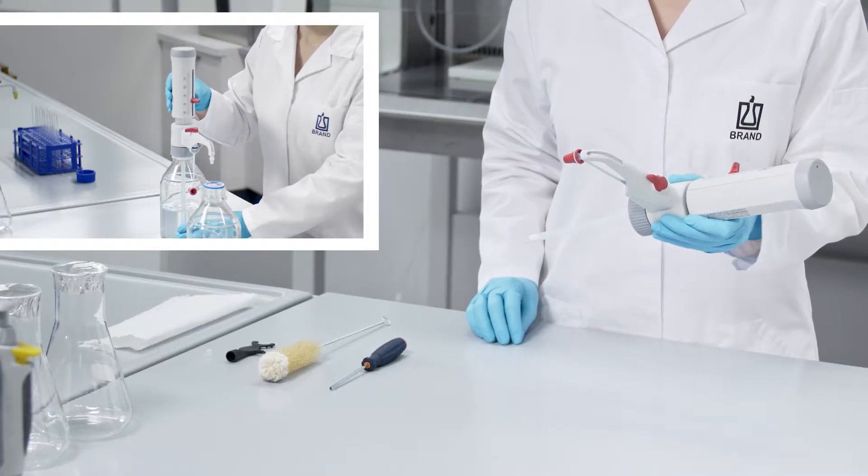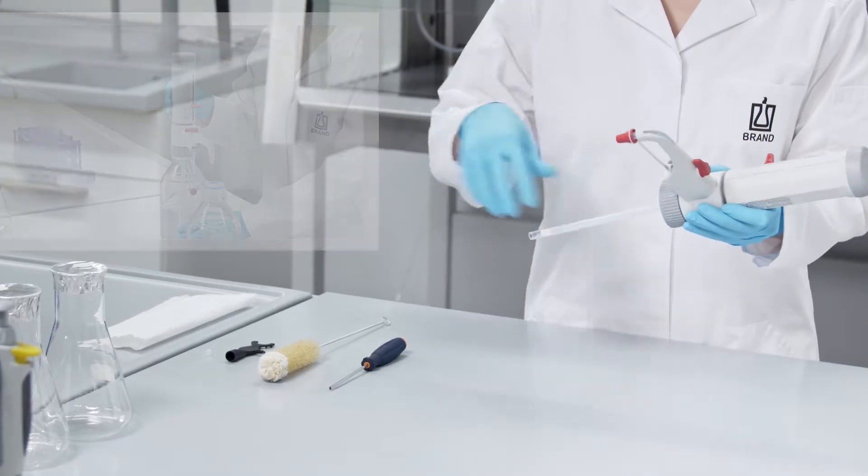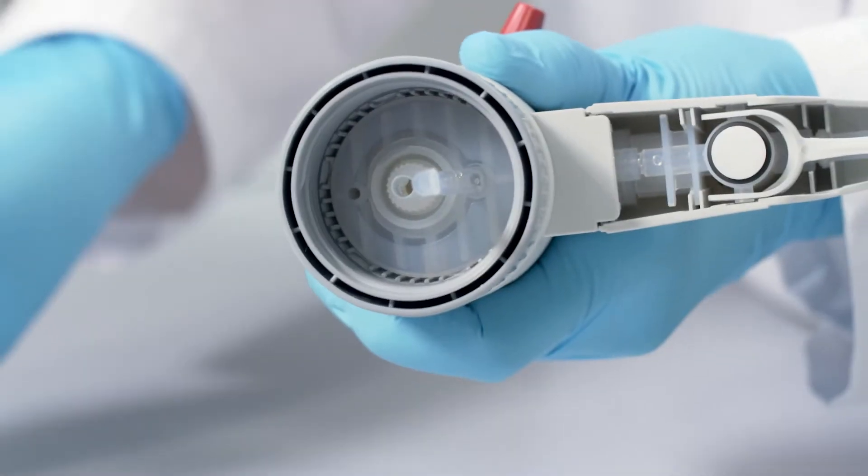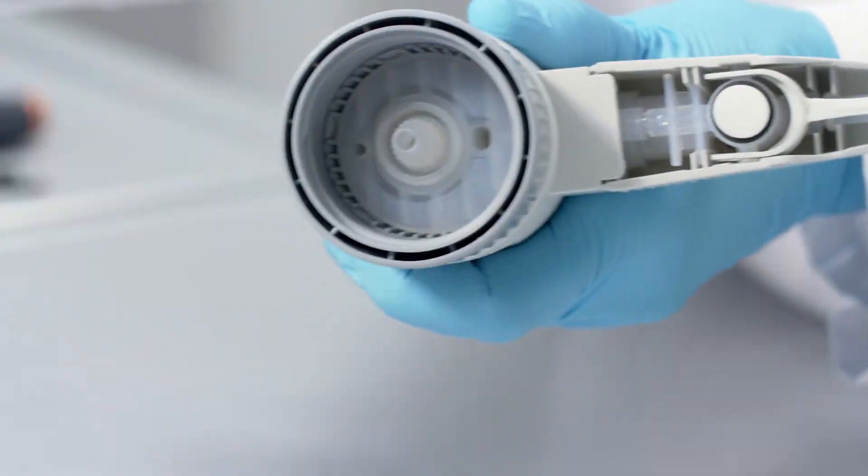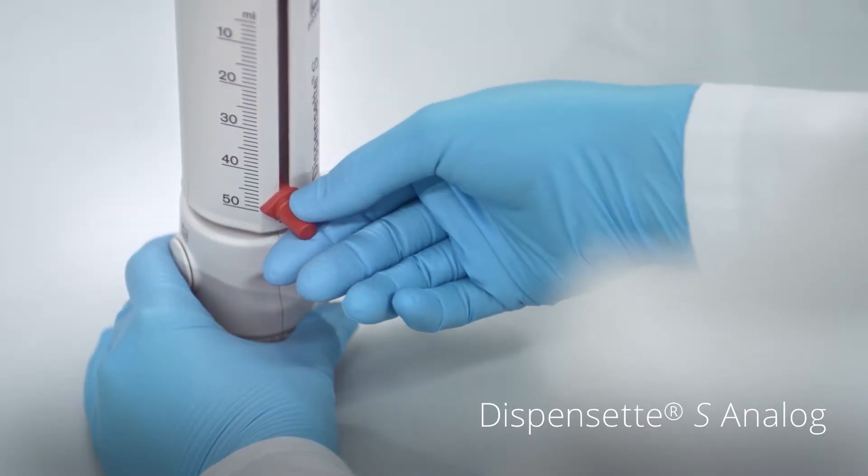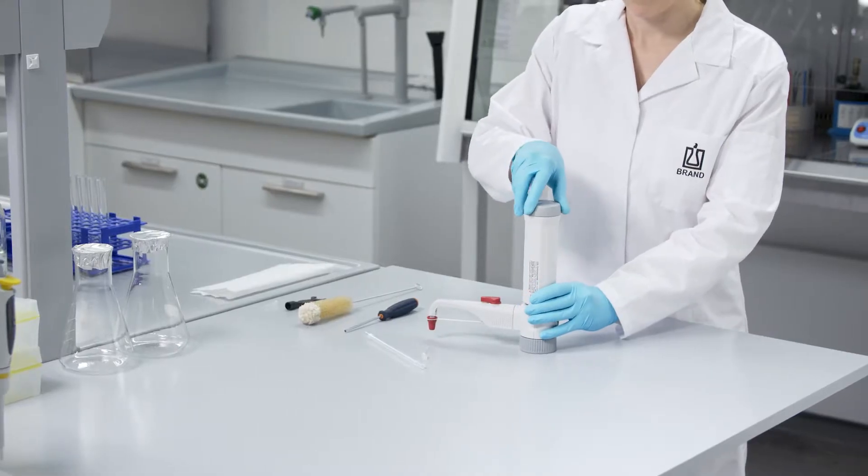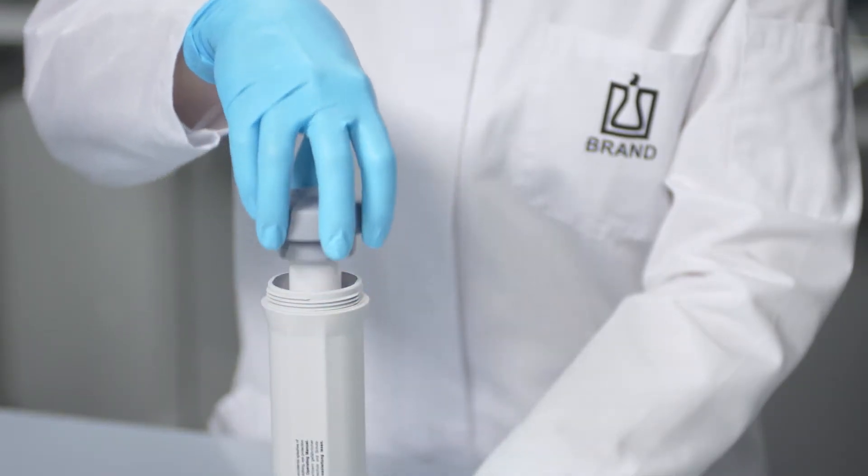Start by rinsing the instrument. Then pull out the filling tube and the optional recirculation tube. For analog models, set the instrument to the maximum volume, unscrew the piston seat completely, and carefully pull out the piston.